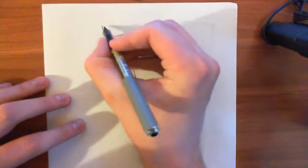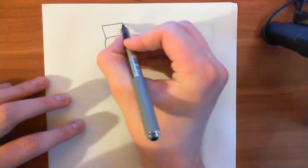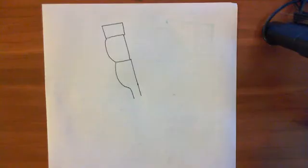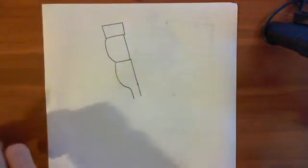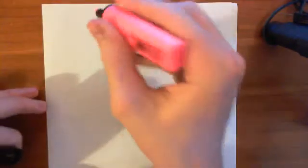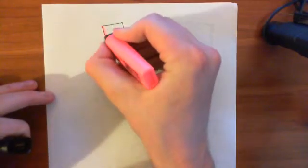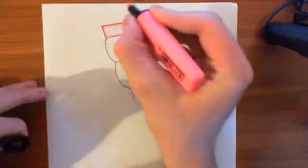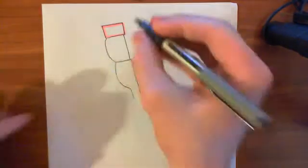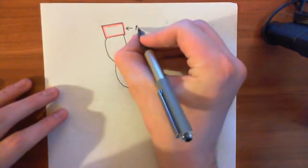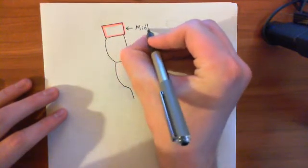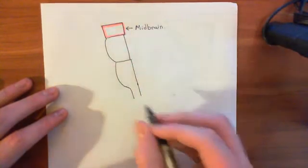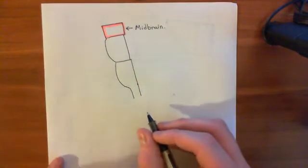Above the pons you have a structure known as the midbrain, and we're going to study this because this is where the first component of our story is. This is where the ventral tegmental area is. So this structure here that I'm circling in red, this is the midbrain. Now again, this is a side view. We are looking from the left-hand side. All we've done is cut away the cerebral hemispheres.